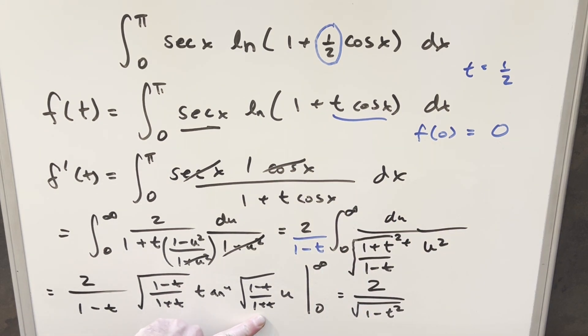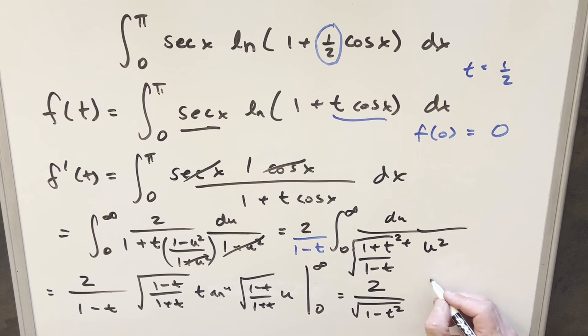This is all going to be infinity here, so I messed that up. So now when you evaluate this at zero, that's going to be zero. When you evaluate infinity, it's just going to be pi over two. Twos are going to cancel. And so yeah, for our value of f prime of t, it's just going to be pi over square root one minus t squared.